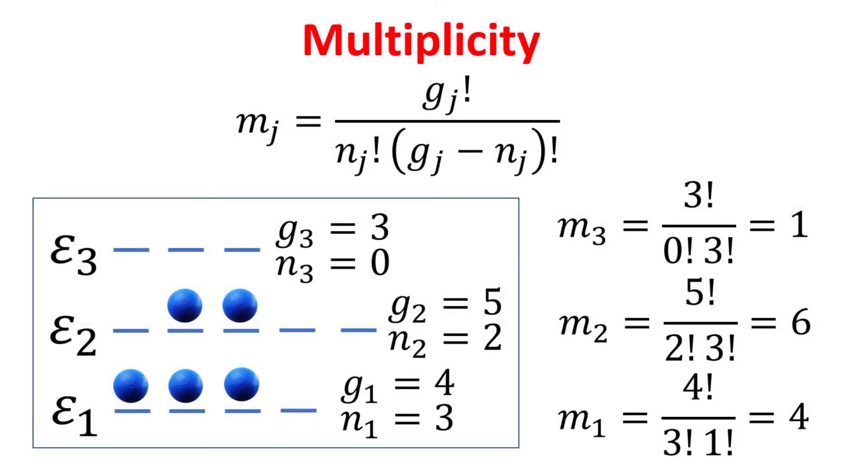Multiplicity is all the possible ways where the electrons can be arranged. We denote the multiplicity for an energy state j as m sub j. Since electrons are identical indistinguishable particles, the number of ways to fill g states with n electrons is then given by the combination formula, which is g factorial divided by n factorial and divided by g minus n factorial.